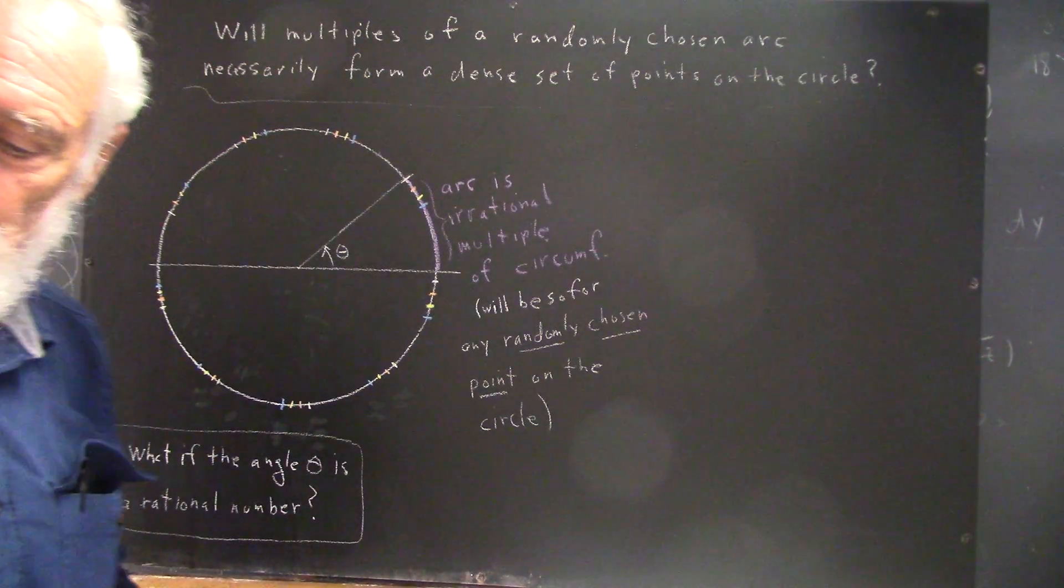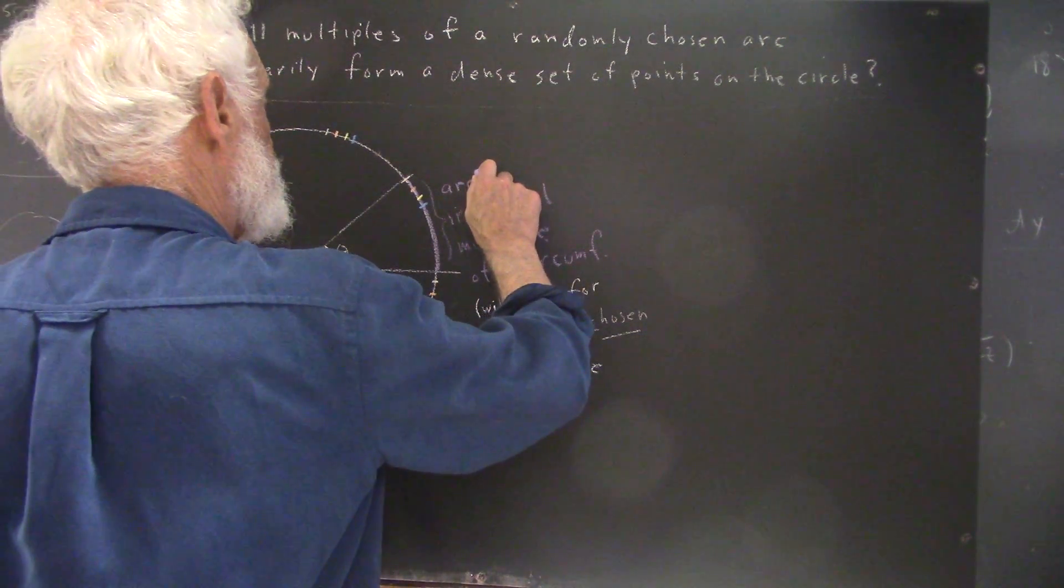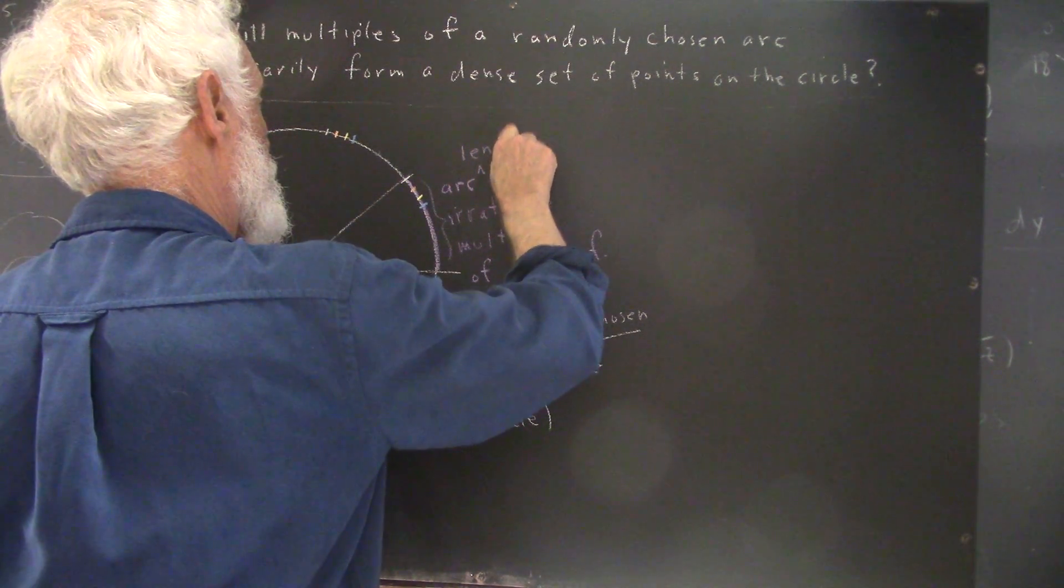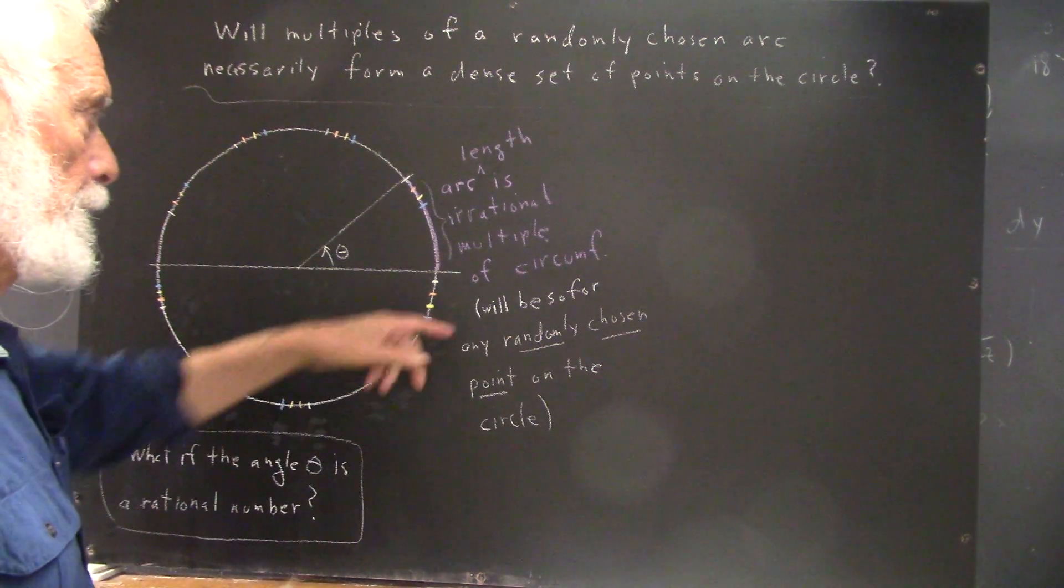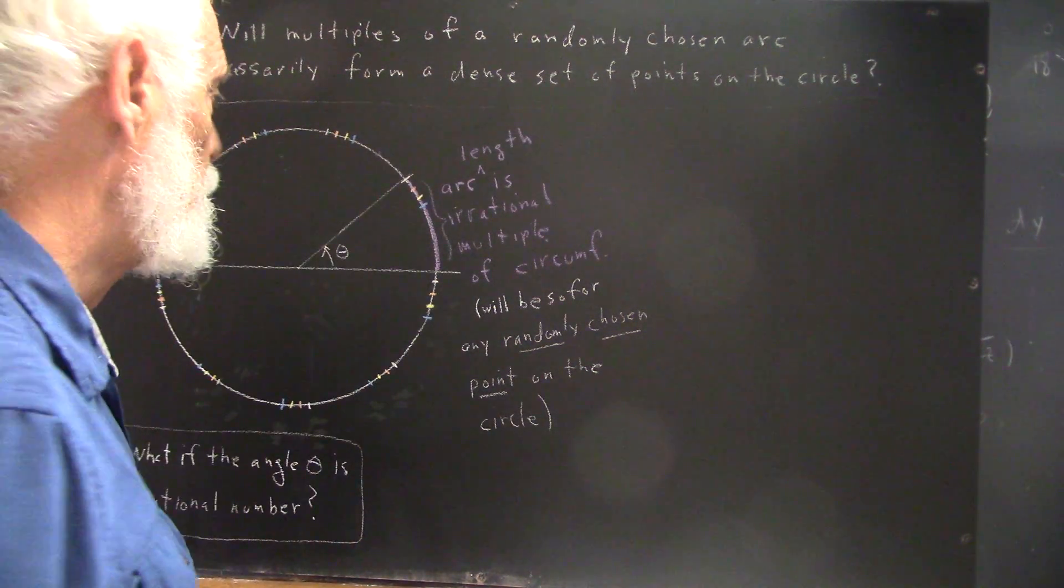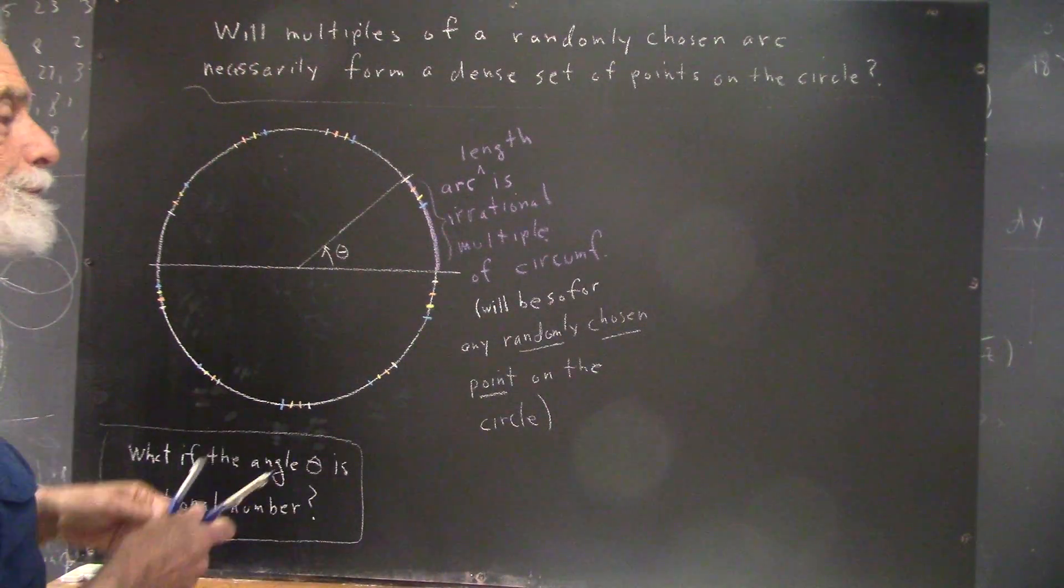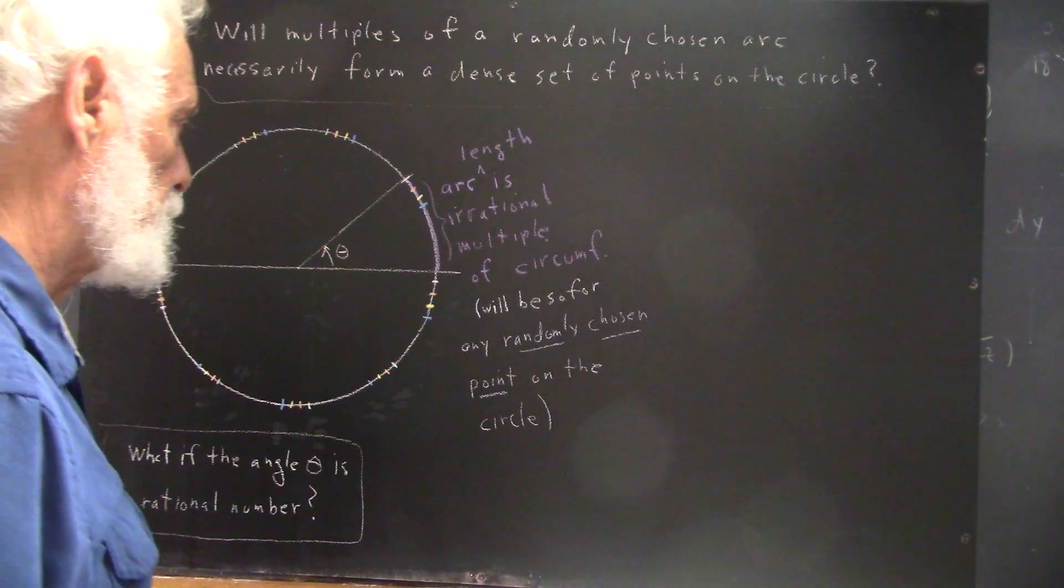And when I say the arc, I should say, to be very specific, the arc length of this arc is an irrational multiple of the circumference of the circle. Okay, well, if this is an irrational multiple of the circumference,